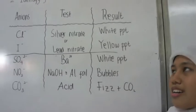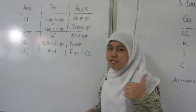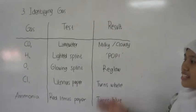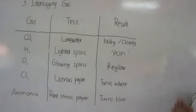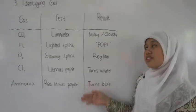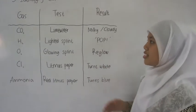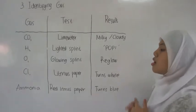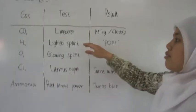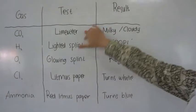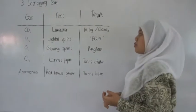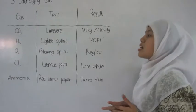Let's move on to the gas. For the gas, we have five gases, which are carbon dioxide, hydrogen, oxygen, chlorine gas, and ammonia. The test also uses different reagents, which are lime water, lighted splint, glowing splint, litmus paper, and red litmus paper. For carbon dioxide, you could use lime water to test the gas, and if you blow carbon dioxide into it, it will turn milky or cloudy.